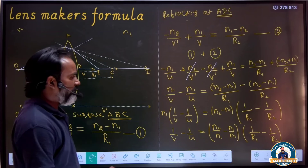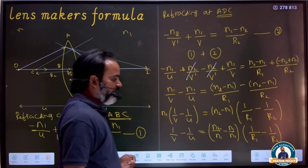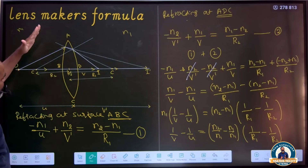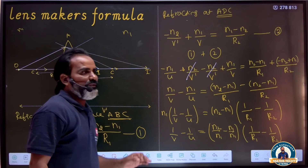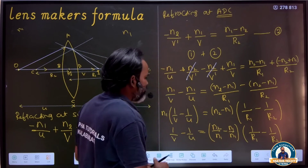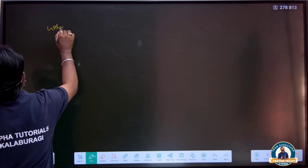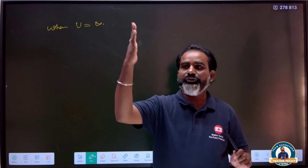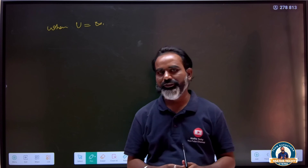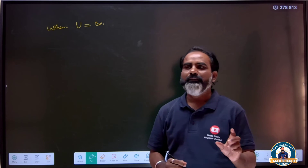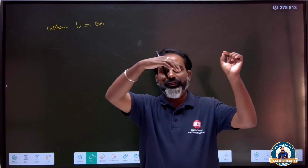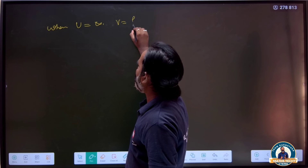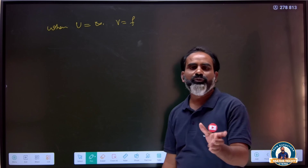When the object is at infinity, the rays are parallel and incident. The angle will be almost zero. When the object is at infinity, the image distance V becomes equal to the focal length f. So 1/f minus 1/infinity equals (N2/N1 minus 1)(1/R1 minus 1/R2), giving us 1/f equals (N2/N1 minus 1)(1/R1 minus 1/R2).